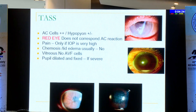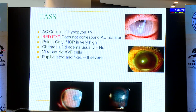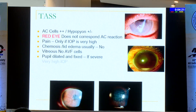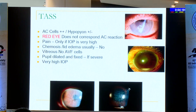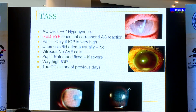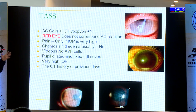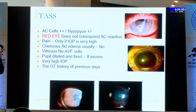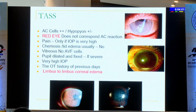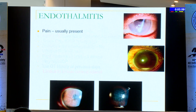If it is a severe TAS, the pupil will be dilated and fixed, and IOP would be very high. You should analyze: if you have been seeing more cells than normally what you see on the first postoperative day, that could suggest TAS. These cases will have limbus-to-limbus corneal edema.